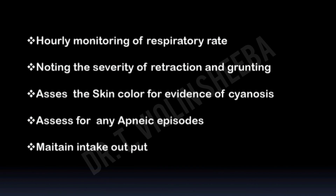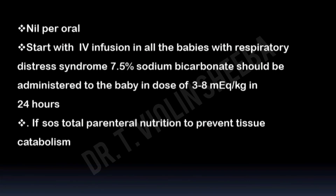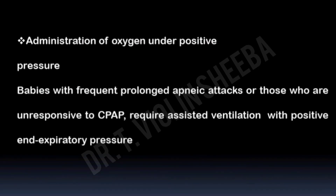Keep the baby nil per oral and maintain an intake-output chart. Start IV infusion of 7.5% sodium bicarbonate and administer a dose of 3 to 8 milliequivalents per kg in 24 hours. If needed, administer total parenteral nutrition to prevent tissue catabolism. Administer oxygen under positive pressure, which helps to prevent collapse of the lungs and improve oxygenation. If the baby's condition does not improve, place the baby on Positive End-Expiratory Pressure (PEEP).